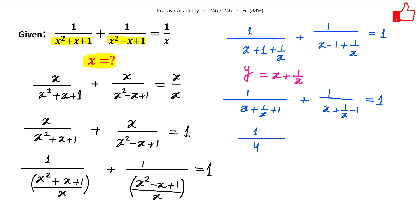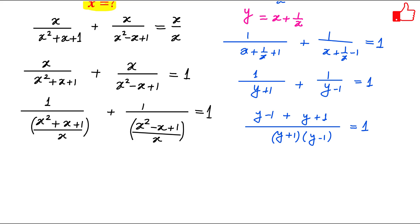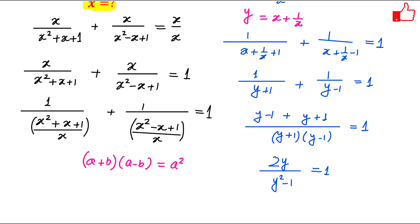So this becomes 1/(y + 1) plus 1/(y - 1) equals 1. Now I can take the LCM, which is (y + 1)(y - 1). So we have (y - 1) + (y + 1) = (y + 1)(y - 1). The 1s cancel, giving 2y = y² - 1, using the formula (a + b)(a - b) = a² - b².